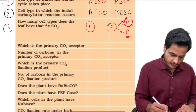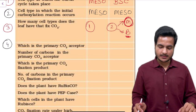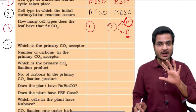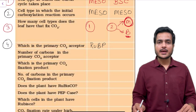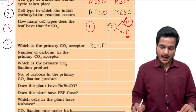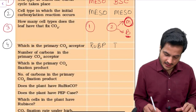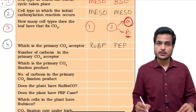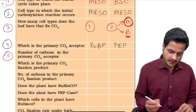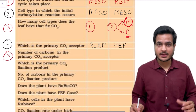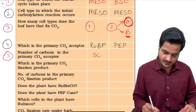The fourth point asks which is the primary carbon dioxide acceptor. In C3 plants, it is a five-carbon keto sugar named RuBP — ribulose bisphosphate. In C4 plants, it is a three-carbon compound called PEP — phosphoenol pyruvate. The fifth question asks the number of carbons in this primary CO2 acceptor: RuBP contains five carbons and phosphoenol pyruvate contains three carbons.